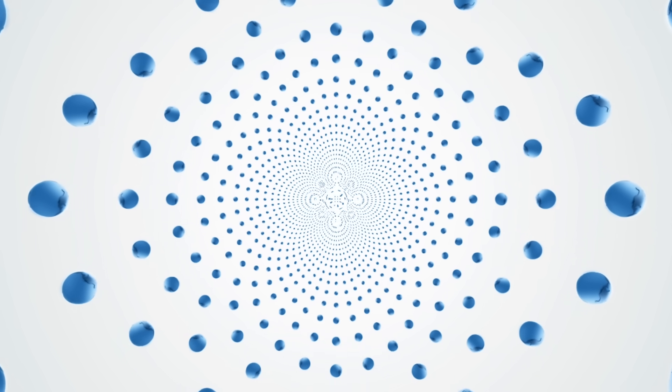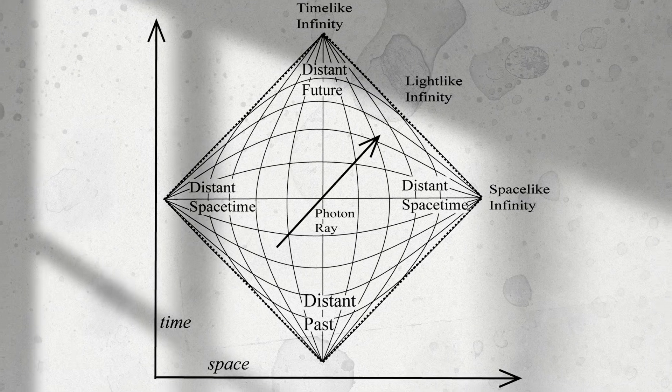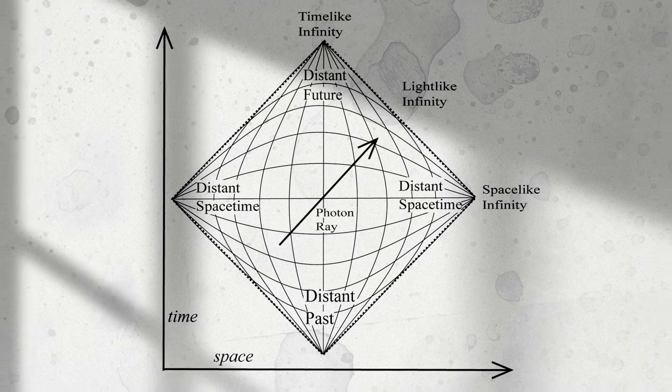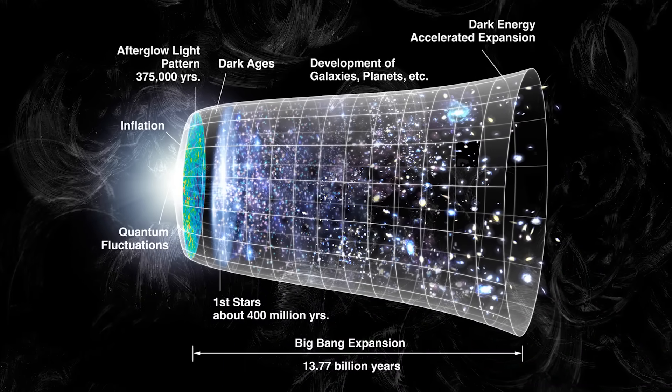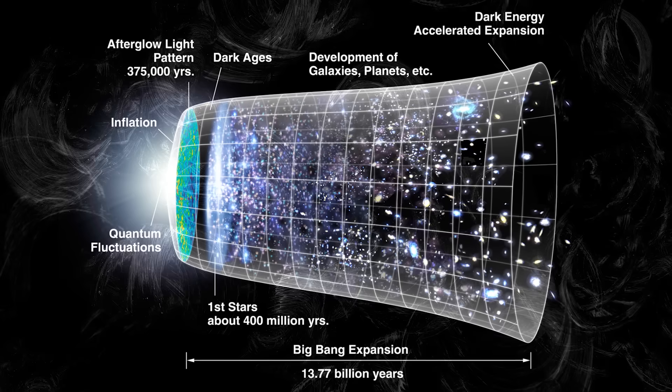Like everything else we will discuss today, there's absolutely no evidence to suggest that the multiverse theory is correct. Still, there are certain problems with current and established cosmological theories that might give it some weight. Let's start with the Big Bang. Most scientists, cosmologists, and just about everybody else accept the theory that our universe was created thanks to a mighty explosion around 13.8 billion years ago.